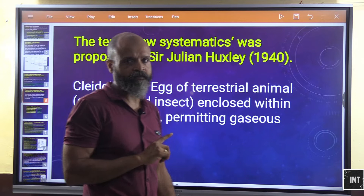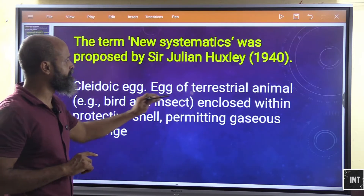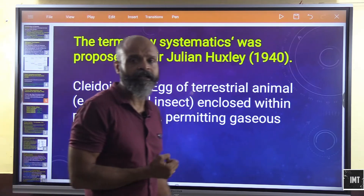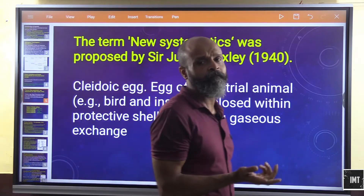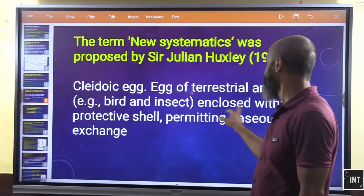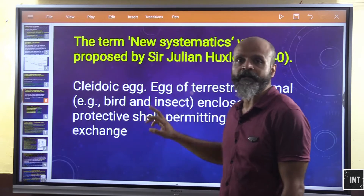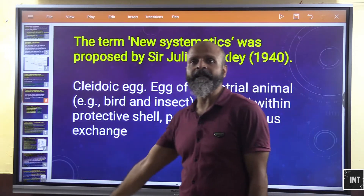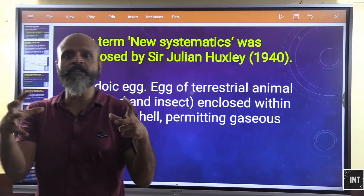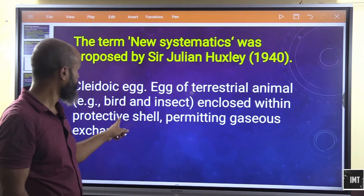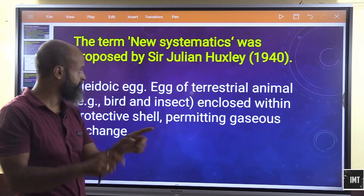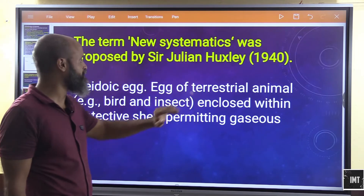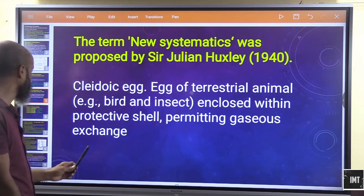A cleidoic egg is the egg of a terrestrial animal such as a bird or insect. It is enclosed within a protective shell that still permits gaseous exchange, so respiration can occur while the egg remains protected.